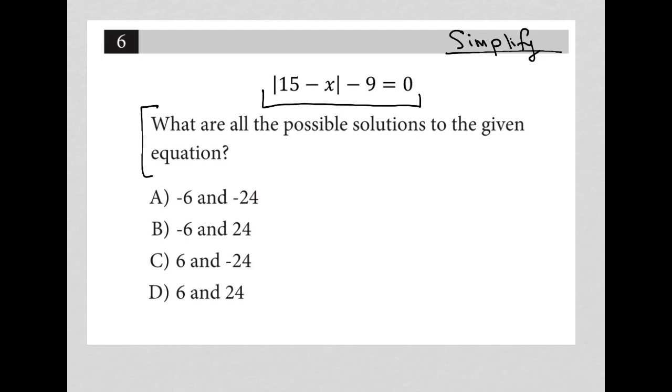I see it. I identify it as simplify. Because I've identified it as simplify, I go straight to simplifying the equation provided. To do that, I'm going to add 9 to both sides. So I have absolute value 15 minus x is equal to 9.